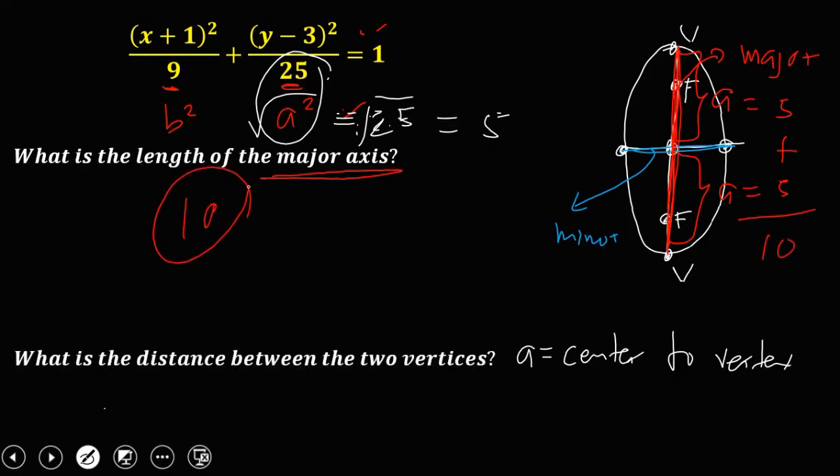Then the distance between the two vertices, so these are the two vertices, the same as the length of the major axis. Therefore, this problem is also equal to 10.